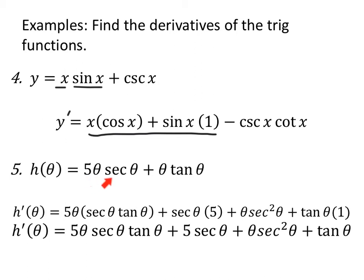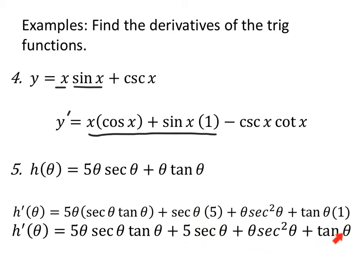Number 5: h(θ) equals 5θ times secant of θ plus θ times tangent of θ. Five θ multiplied by secant θ is a product rule. Plus θ times tangent θ is another product rule. So I'm going to use the product rule twice: 5θ times the derivative of secant, plus secant θ times the derivative of 5θ; then plus θ times the derivative of tangent, plus tangent times the derivative of θ. In the final line, rewrite 5 as a coefficient of secant so it doesn't sneak inside, and eliminate the times 1, since tangent θ times 1 is just tangent θ.